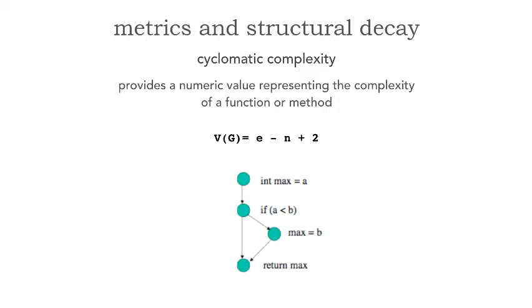And so if we take a look at a piece of source code, we can see max equals a. If a is less than b, then make the max b, otherwise return max, which is a. And if we take a look at this simple code, the edges are the pathways between certain statements, whereas the nodes, which is n in that calculation, is actually the number of nodes.